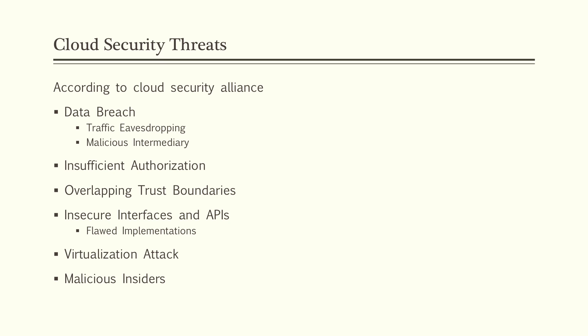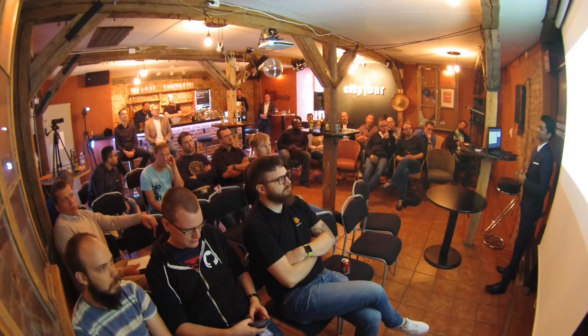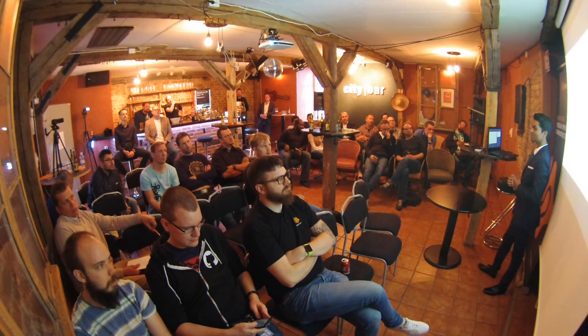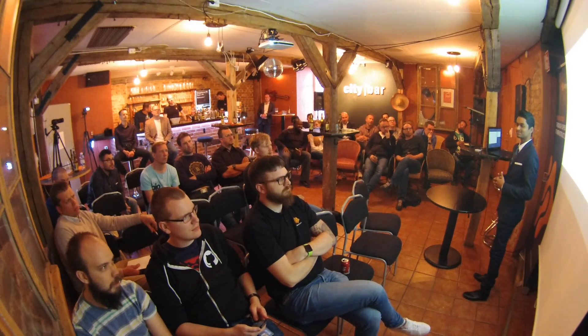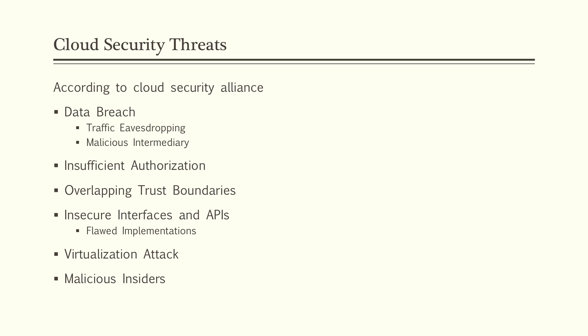Data breach is something like someone stealing our data without our notice. If you find something malicious like a malicious intermediary — do you guys work with Burp Suite? That's a tool which can actually manipulate users' requests. Something like insufficient authorization and overlapping test boundaries are general security threats limiting the effectiveness of the cloud.